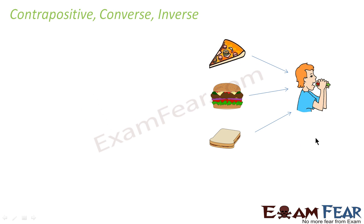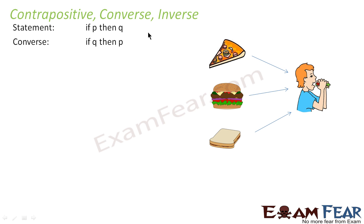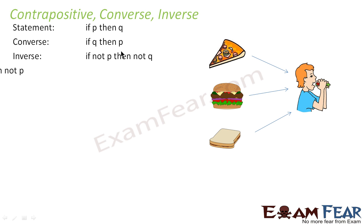For contrapositive, converse, and inverse statements, please pay attention here — it is a little tricky. For example, if the statement is 'if p then q' (for example, if sandwich then food), then the converse will be 'if q then p', the inverse will be 'if not p then not q', and the contrapositive will be 'if not q then not p'.